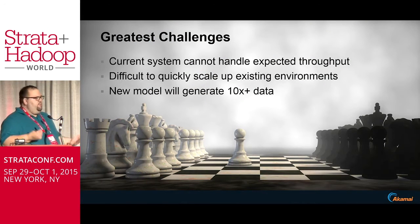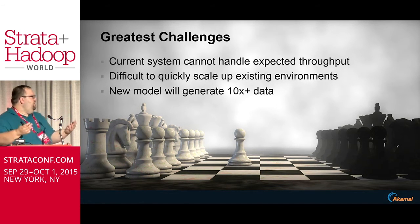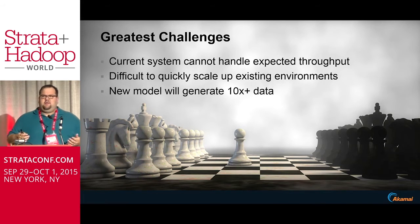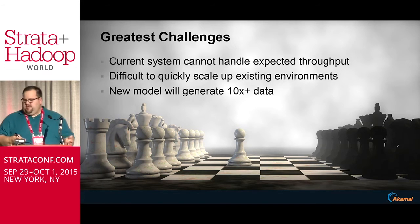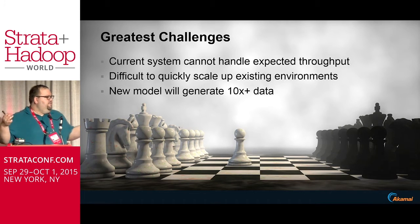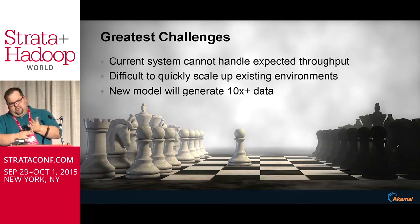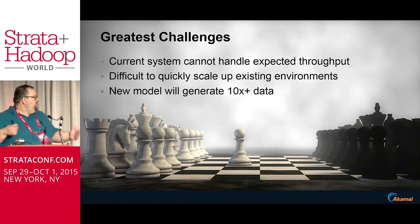So what are the challenges with the new model? Our current database system can't handle the expected throughput. We expect this new model to generate far more data. On top of that, the product manager said we also want to bill across 10 different geo regions. So now we have five key fields: customer, time, flags, sub-customer information, and geography region. We expect a large amount of this data.